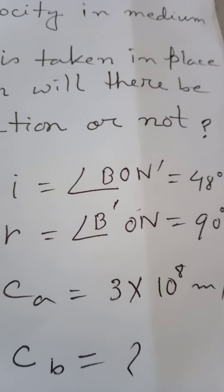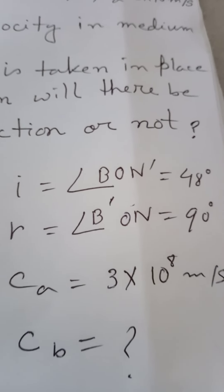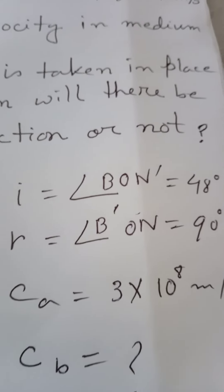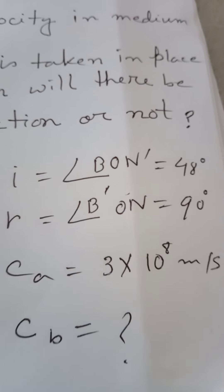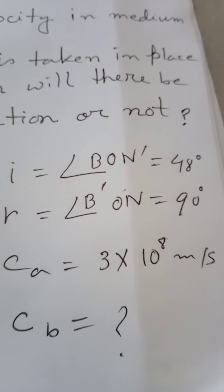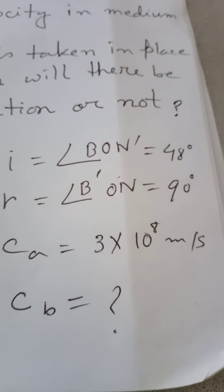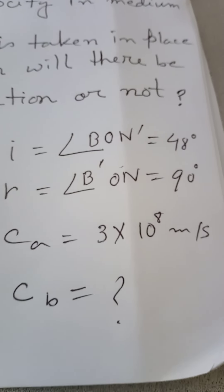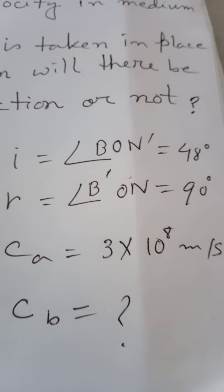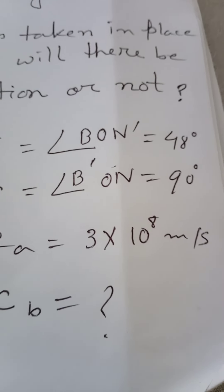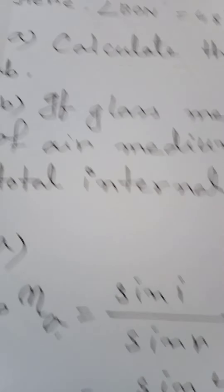In part A, the given values are: incident angle i = BON' = 48 degrees; refracted angle B'ON = 90 degrees; velocity of light in air medium CA = 3 × 10⁸ meters per second. We have to find out the velocity of light in medium B, i.e., CB.